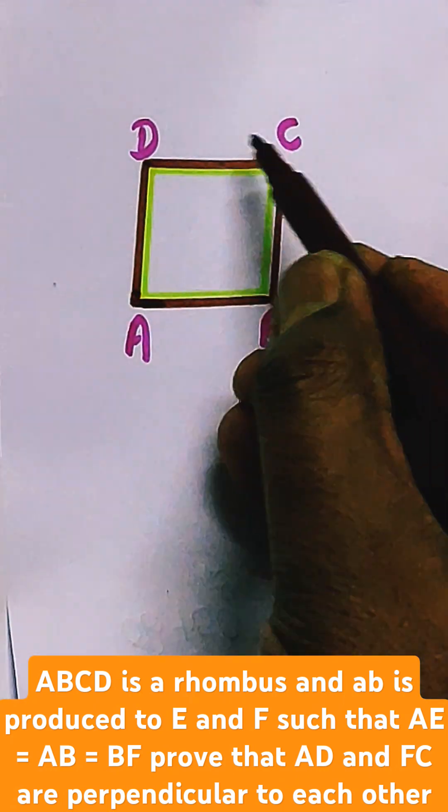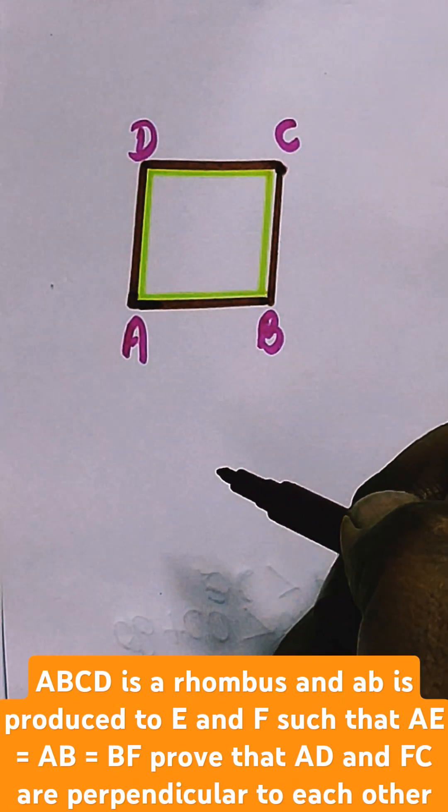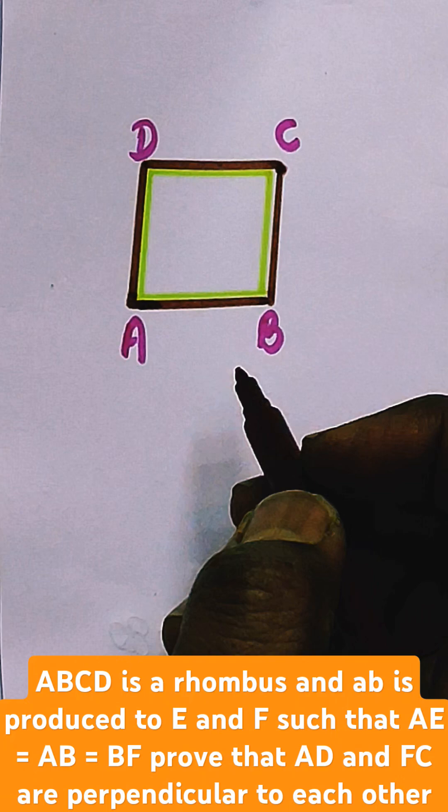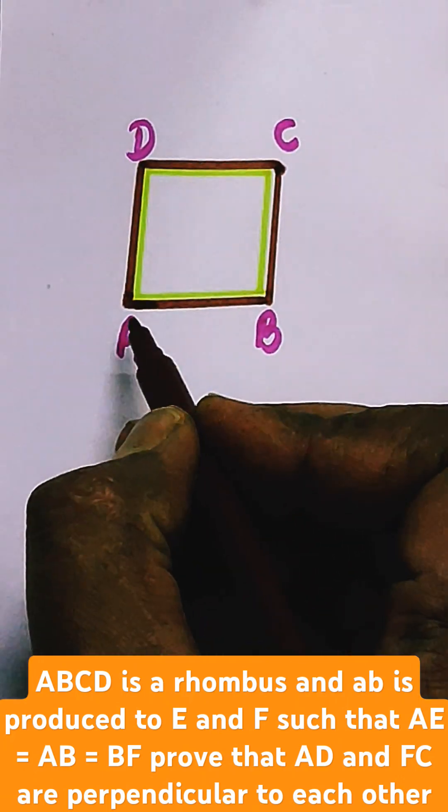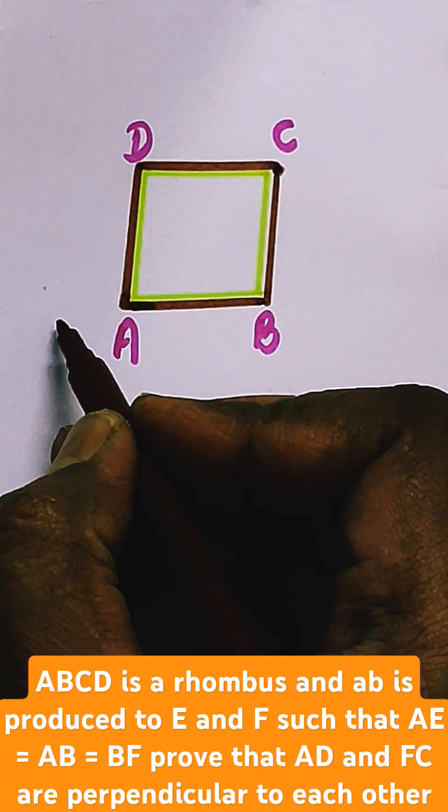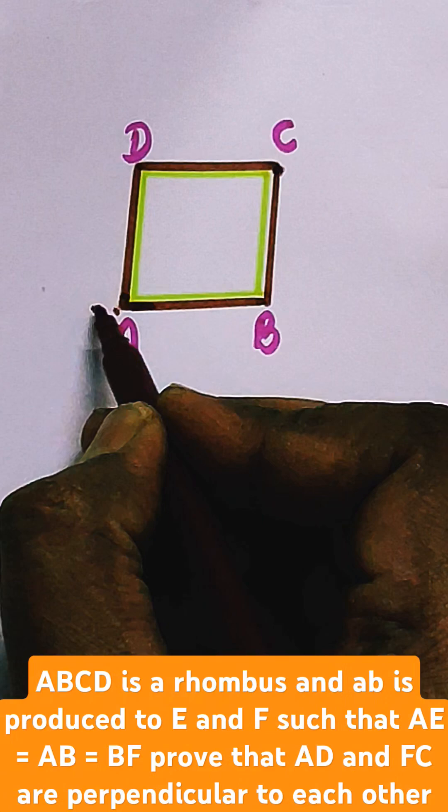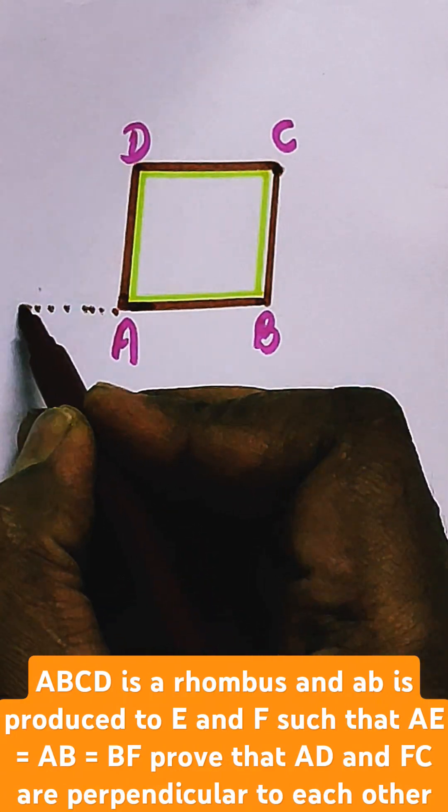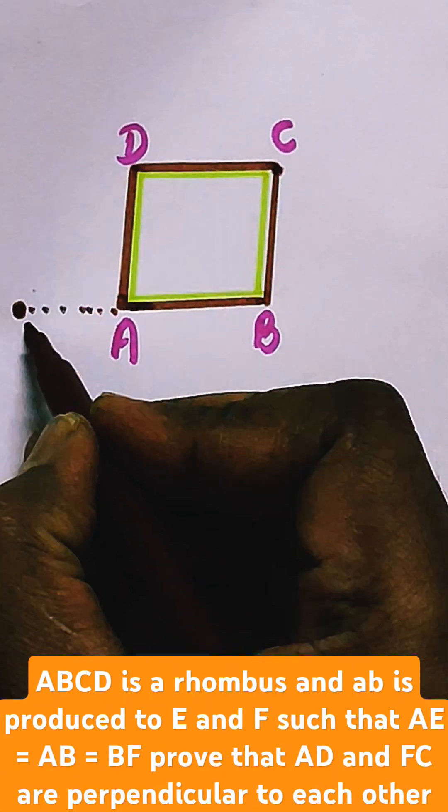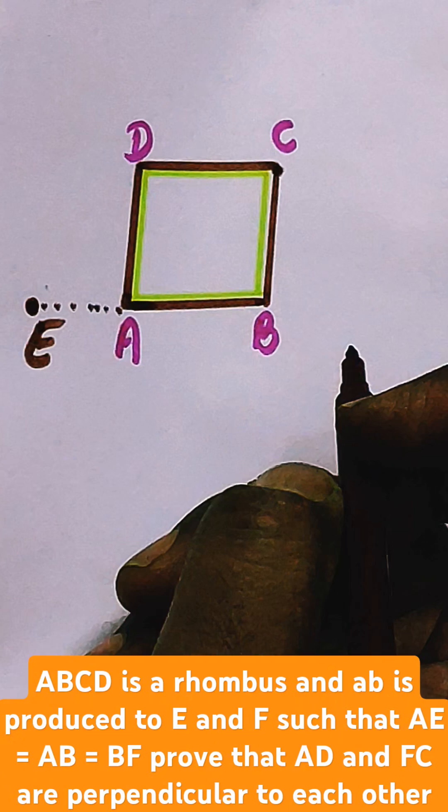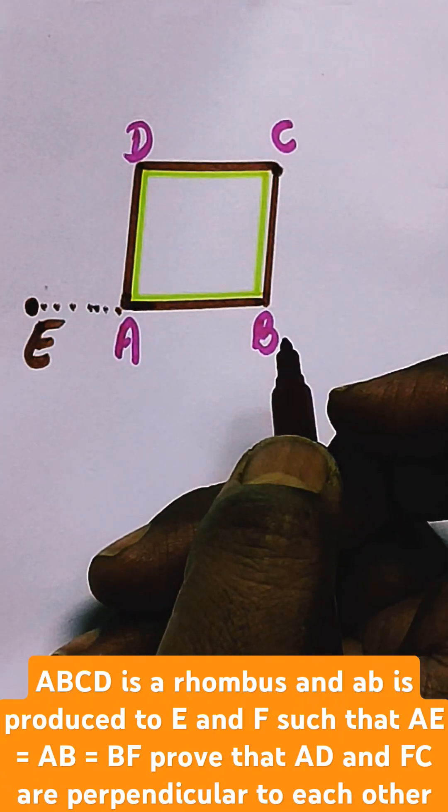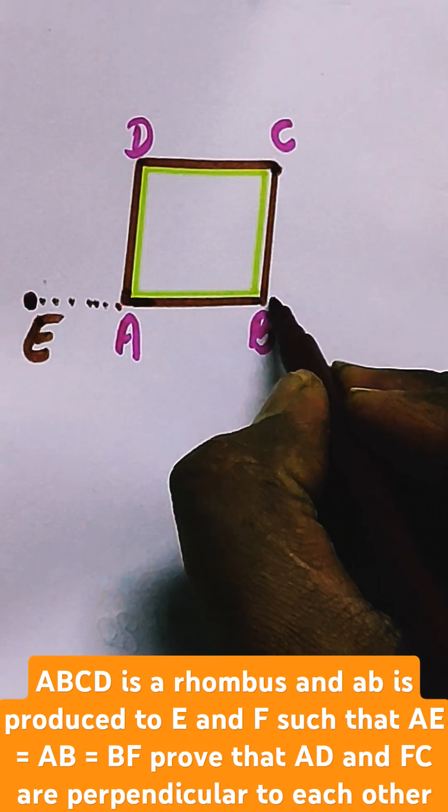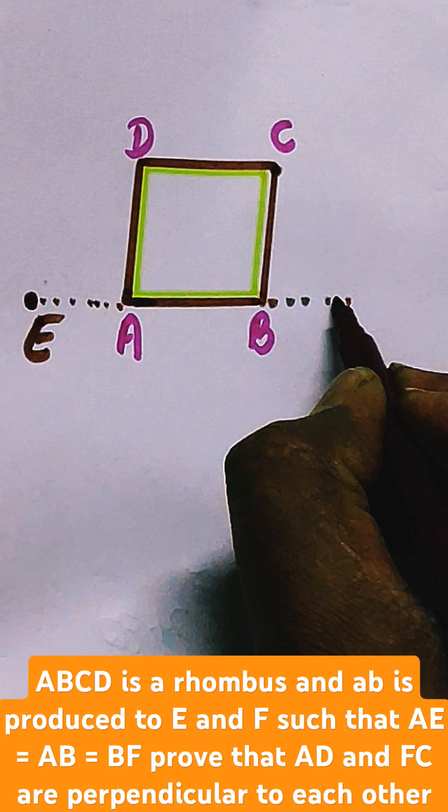In this question, ABCD is a rhombus given to you and AB is produced to E. AB is produced in another direction to F.